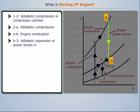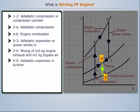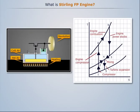From B to 3 there occurs adiabatic expansion for the power stroke in the cylinder. Process 3-4 represents mixing of M1 kg of engine exhaust and M2 kg of bypass air. From point 4 to 5 there is adiabatic expansion in the turbine. Thus we can summarize as follows.